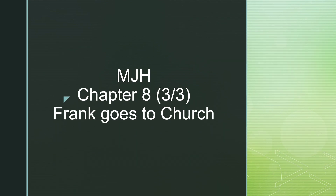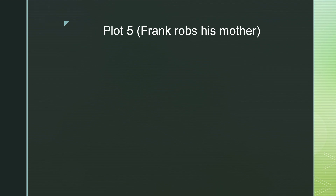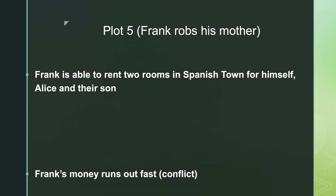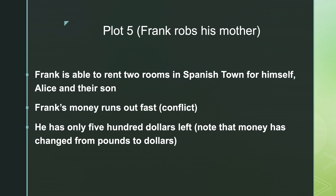So this is part 3 of Frank Goes to Church. Now in this section, as per usual, Frank is running short of money. If you can recall in part two, he had come back from St. Anne with a lot of money after scamming the church. With all of that money he came back with, he was able to rent two rooms for himself, Alice, and their child in Spanish Town. Of course, he runs out of money again, and this poses a conflict, a problem that Frank needs to solve. How is he going to solve it this time around?